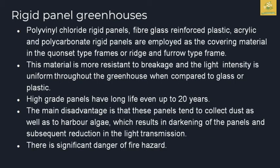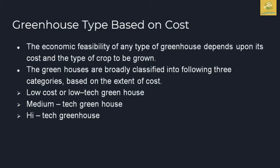In rigid panel greenhouses, fiberglass reinforced plastic (FRP) and polycarbonate rigid panels are used as covering material with Quonset or ridge-and-furrow type frames. The material is more resistant to breakage and light intensity is more uniform compared to glass or plastic. High-grade panels can last up to 20 years. The main disadvantage is that panels tend to collect dust and harbor algae, causing darkening and reduction in light transmission. There is also a significant fire hazard risk.